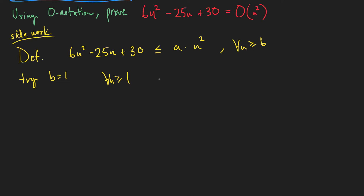Let's use this and find some little facts. For n ≥ 1, we know that 1 is less than or equal to n, and also that 1 is less than or equal to n². We can also find that n is less than or equal to n². That should be true for all n ≥ 1 — convince yourself that's true.